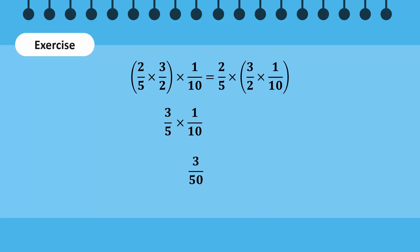On the right-hand side, we will first multiply 3 over 2 and 1 over 10, which results in the fraction 3 over 20. 2 over 5 times 3 over 20 is equal to 3 over 50.